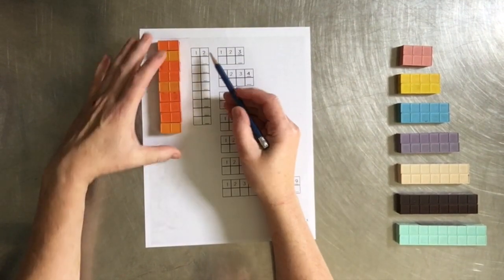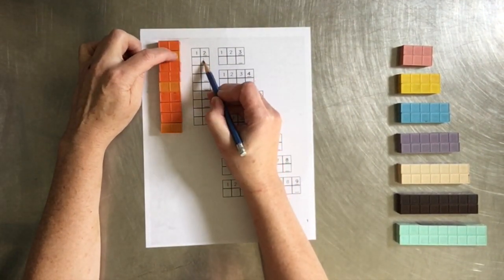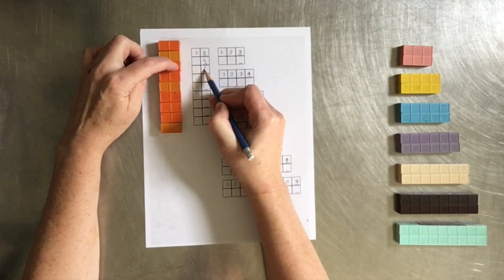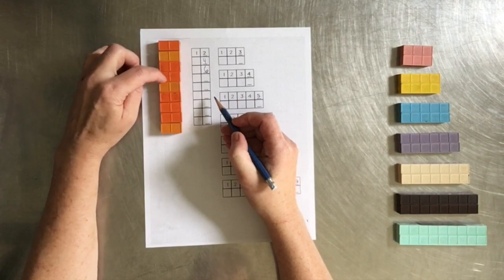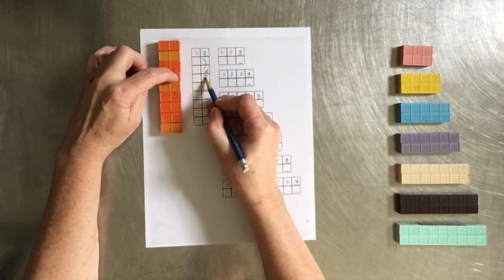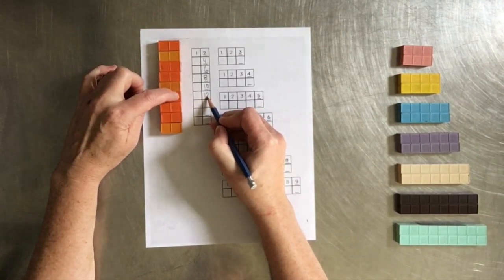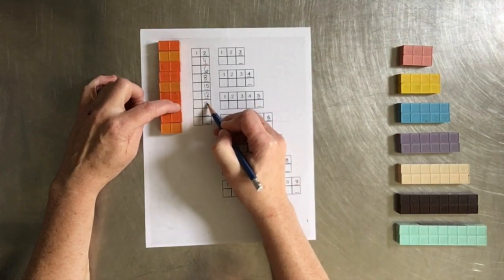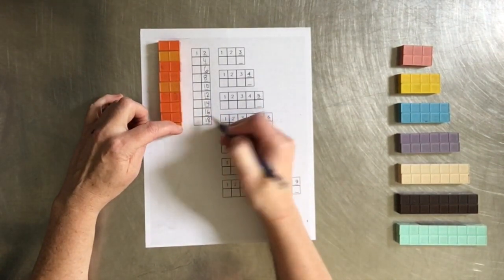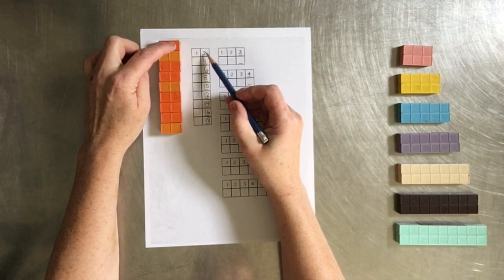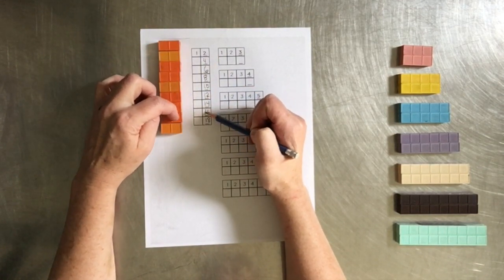Now we are counting 2's. Well 1, 2 is 2. 2 2's is 4. 3 2's is 6. And again they may need to go 1, 2, 3, 4, 5, 6, 7, 8, 9, 10, 11, 12, 13, 14, 15, 16, 17, 18. Or they may just be able to count 2, 4, 6, 8, 10, 12, 14, 16, 18.